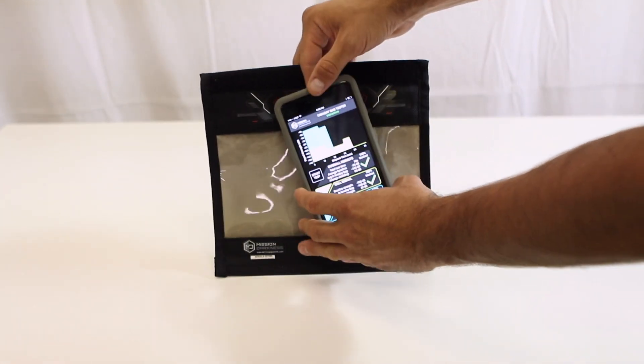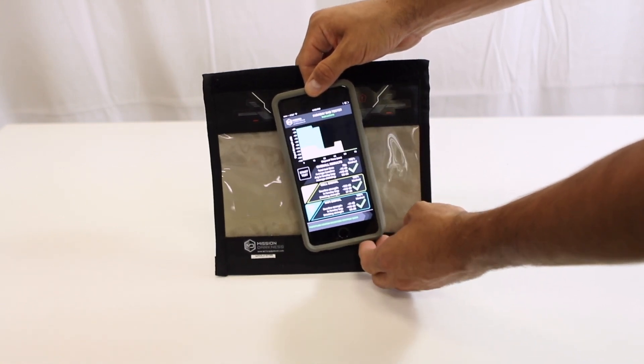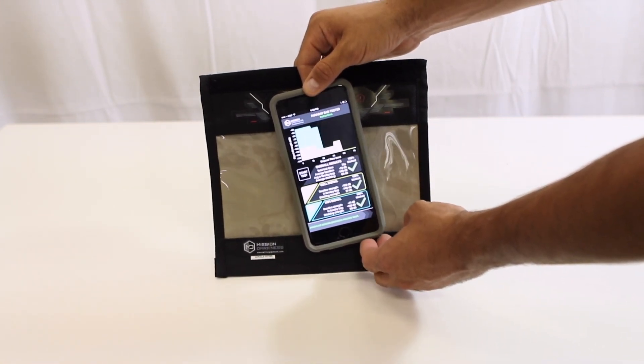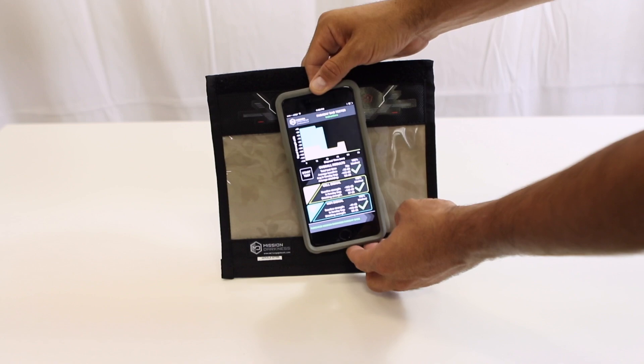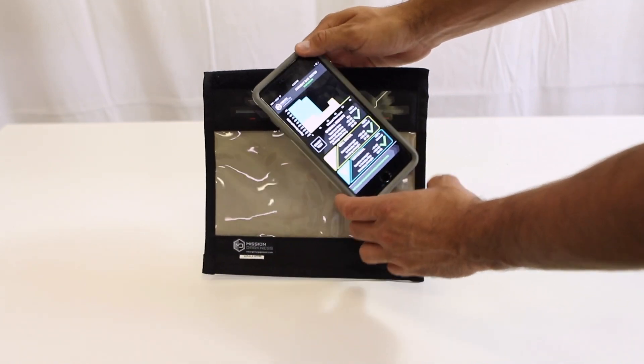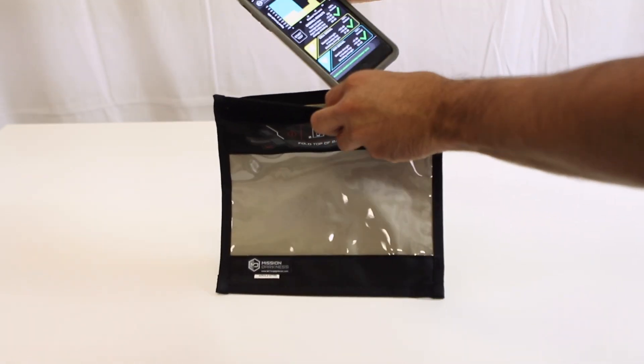We're going to use our app. This is called Faraday Test for iPhone and MD Faraday Bag Tester for Android. This will let you test Wi-Fi, cell signals, and Bluetooth for any Faraday bag. You can try this for yourself if you have our bags.